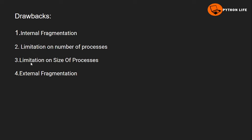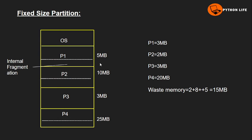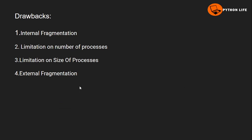The third drawback is limitation on the size of processes. For example, if a process is 100MB in size, and the available partitions are only 5MB and 10MB, we cannot store that 100MB process. So fixed size partition has a limitation on the maximum size of a process that can be stored.